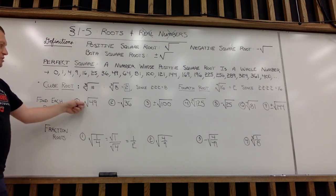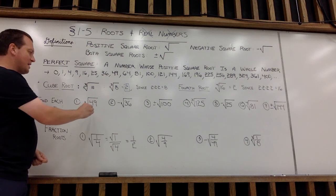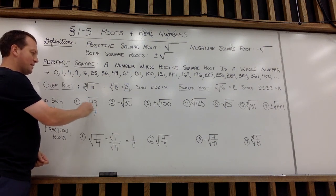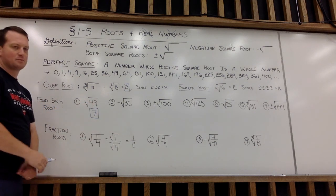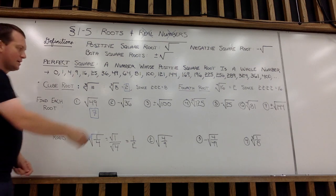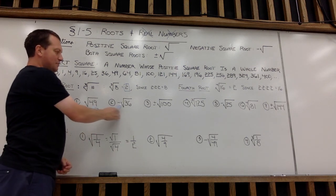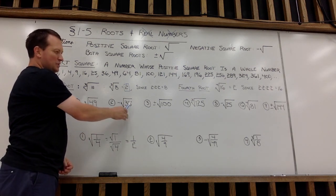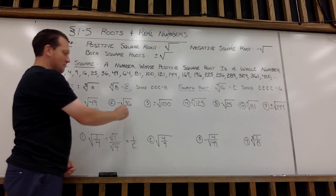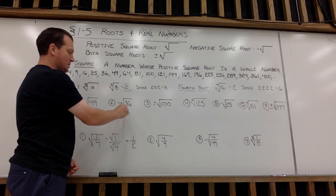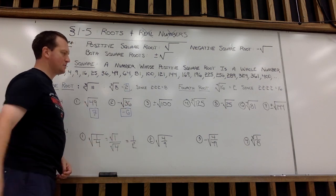So, first example, I have just a positive square root of 49. Hopefully, you can do that in your head. That would be 7, since 7 times 7 is 49. Example 2, the negative square root of 36, or take the square root of 36 and then take its opposite. So I'm going to take the opposite of 6, or negative 6.